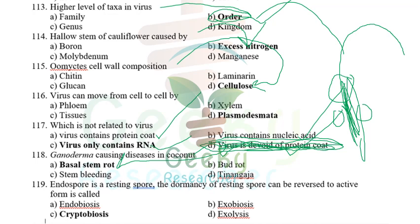Ganoderma causing disease in coconut is basal stem rot — caused by Ganoderma. Endospore is a resting spore; the dormancy of resting spores can be reversed to active form by a process called cryptobiosis. The answer is cryptobiosis.